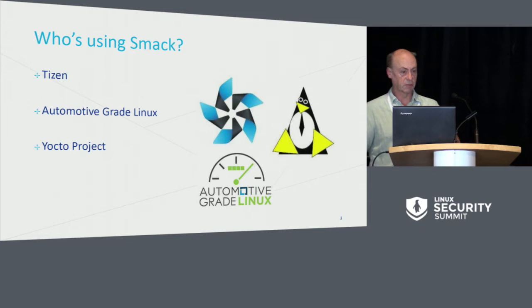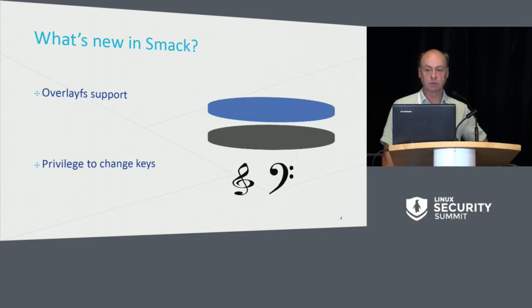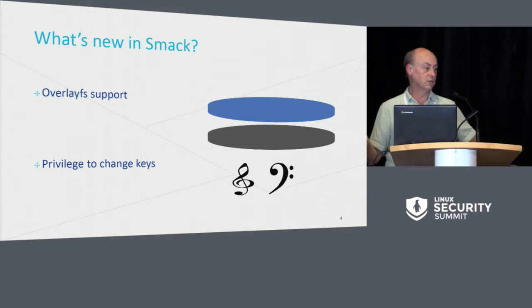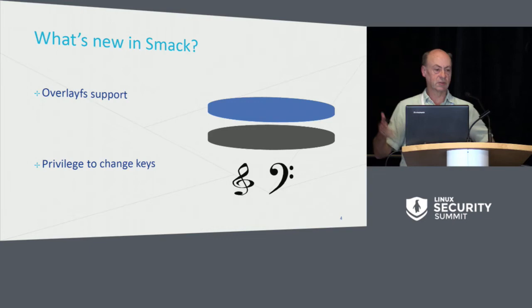So what's new in SMAC? Not really a whole lot this year. We finally got support for OverlayFS, which turned out to be painfully trivial — kind of embarrassing. The other thing was that we had never implemented a mechanism whereby a privileged process could change information about keys. If it was your own key with your own SMAC label, you could change the key just fine, but if you had privilege, you couldn't. That was a simple change to make, so now you have a little bit more control over your key set.